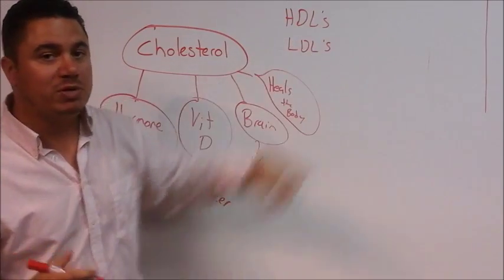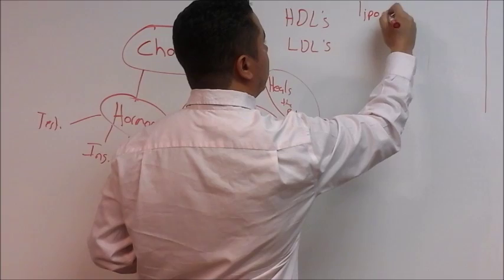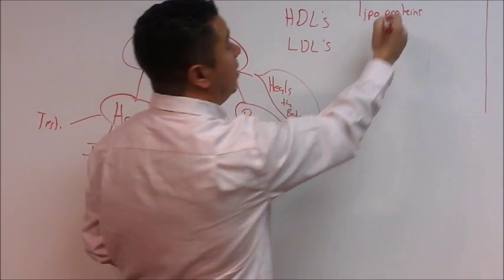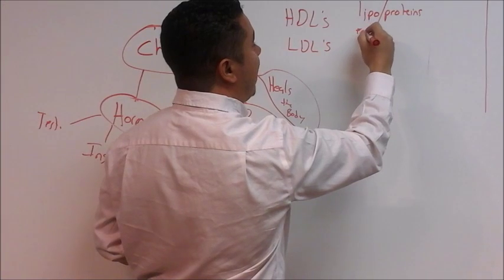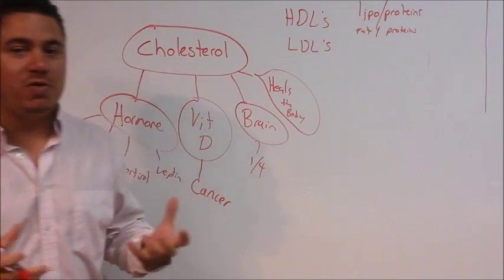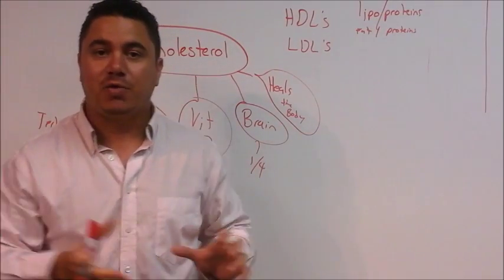What these are is this: they're called high density lipoproteins. Lipo just means fat. So they're fat proteins and what these things do, they're like little trucks.